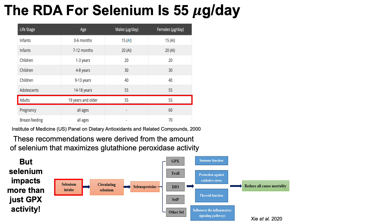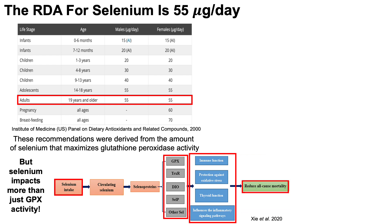But selenium impacts more than just glutathione peroxidase activity. Dietary selenium intake influences circulating selenium levels, which in turn impact selenoproteins — proteins whose activity depends on selenium. These include not just glutathione peroxidase, but thioredoxin reductase (TRXR), deiodinases (DIO) involved in thyroid hormone regulation, selenoprotein P, and others. Collectively, these selenium-dependent proteins affect immune function, thyroid function, oxidative stress protection, inflammatory signaling, and mechanisms that reduce all-cause mortality risk.